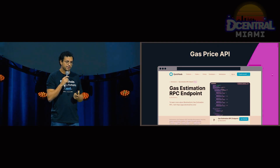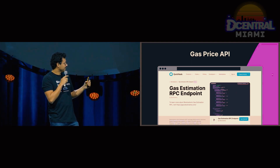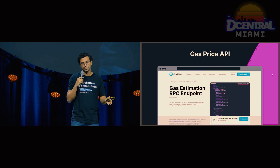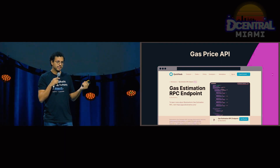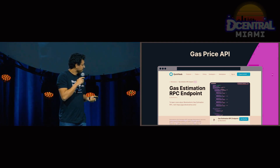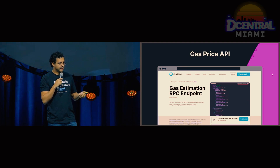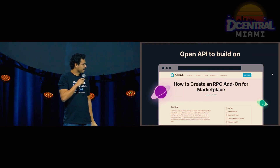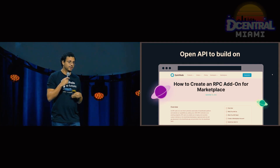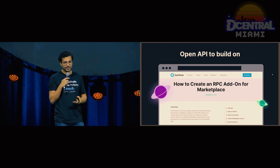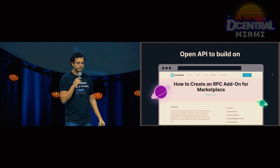Another add-on is gas price estimation. Maybe you've sent a transaction and it hung around for a really long time. We have a partner called BlockNative that uses machine learning to predict the gas price for the next five blocks. You can use BlockNative to figure out with a very high degree of confidence what the gas price will be at the next block and the block after that. My favorite thing about the marketplace is actually that it's an open API — if any of you developers wanted to create your own add-on and sell to the more than 125,000 developers registered on QuickNode, you could absolutely do it.